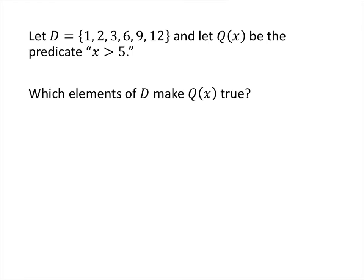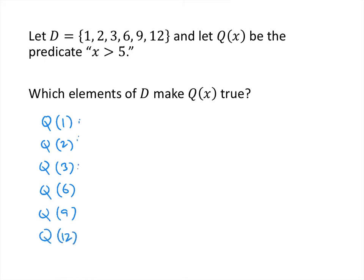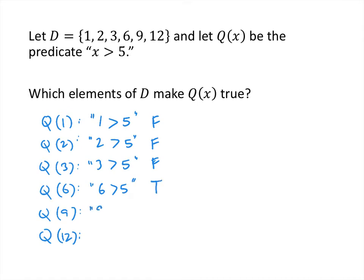Let's do one more. This time we have the same set of numbers 1, 2, 3, 6, 9, and 12, and Q of x is the predicate 'x is greater than 5.' We proceed the same way. Q of 1: '1 is greater than 5' — false. Q of 2: false. Q of 3: false. Q of 6: '6 is greater than 5' — true. Q of 9: true. Q of 12: true. So the numbers we're looking for are 6, 9, and 12.